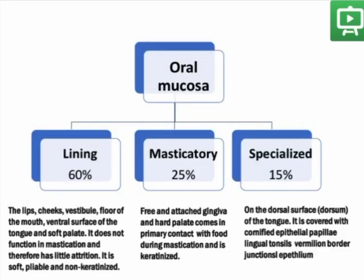Moving to the subdivisions of the oral mucosa according to their function and location, the oral mucosa is subdivided into three parts. The lining mucosa constitutes 60% of the total surface and includes the labial mucosa, buccal mucosa, alveolar mucosa, the floor of the mouth, the ventral surface of the tongue, and the soft palate.